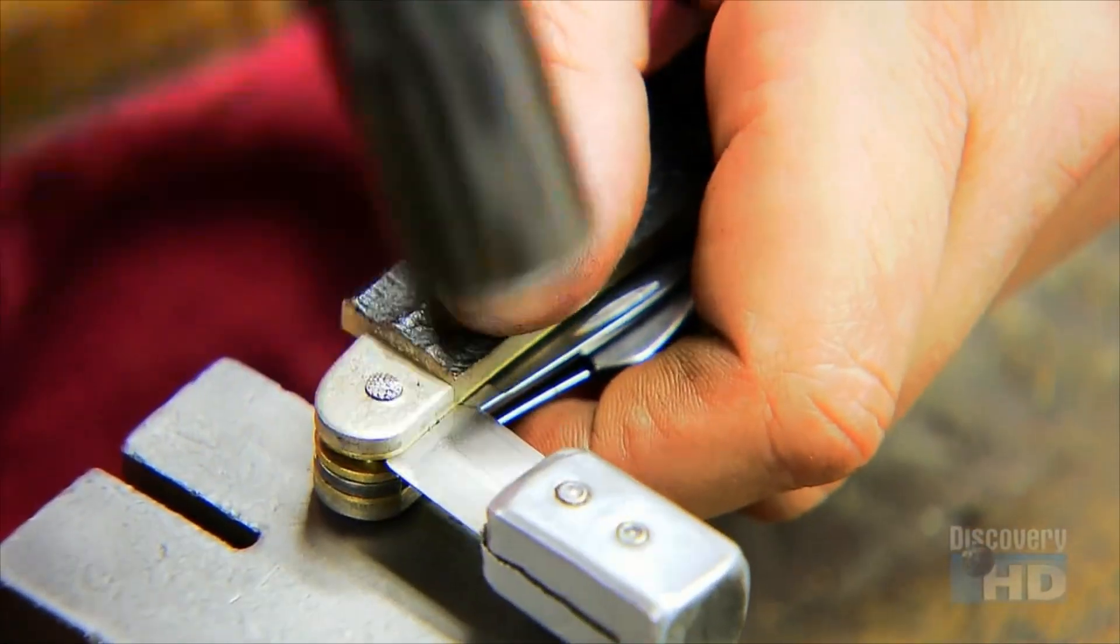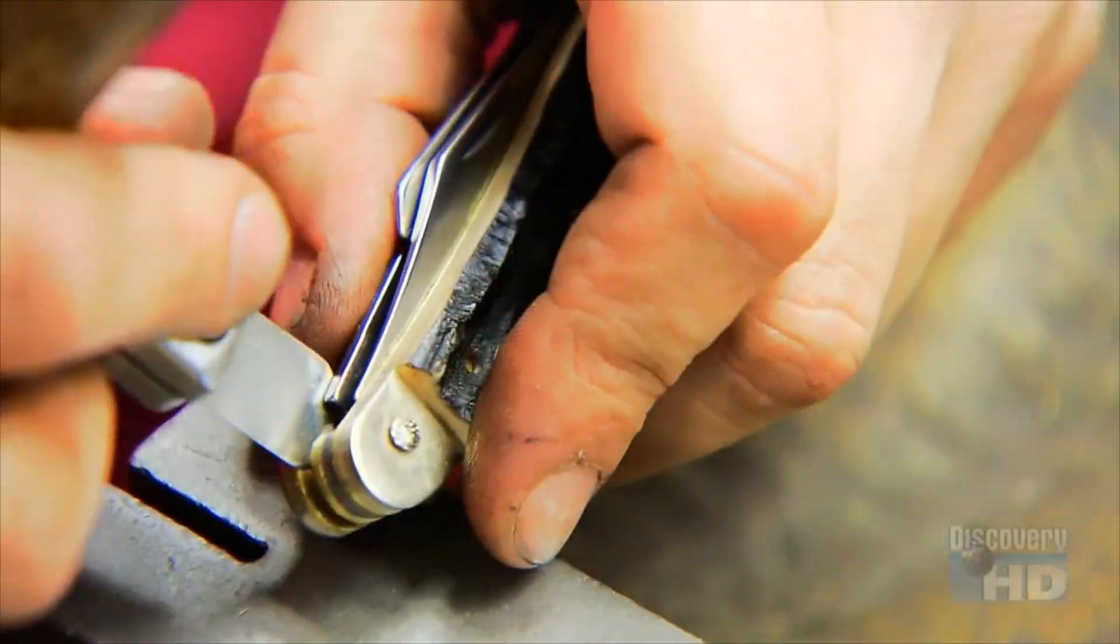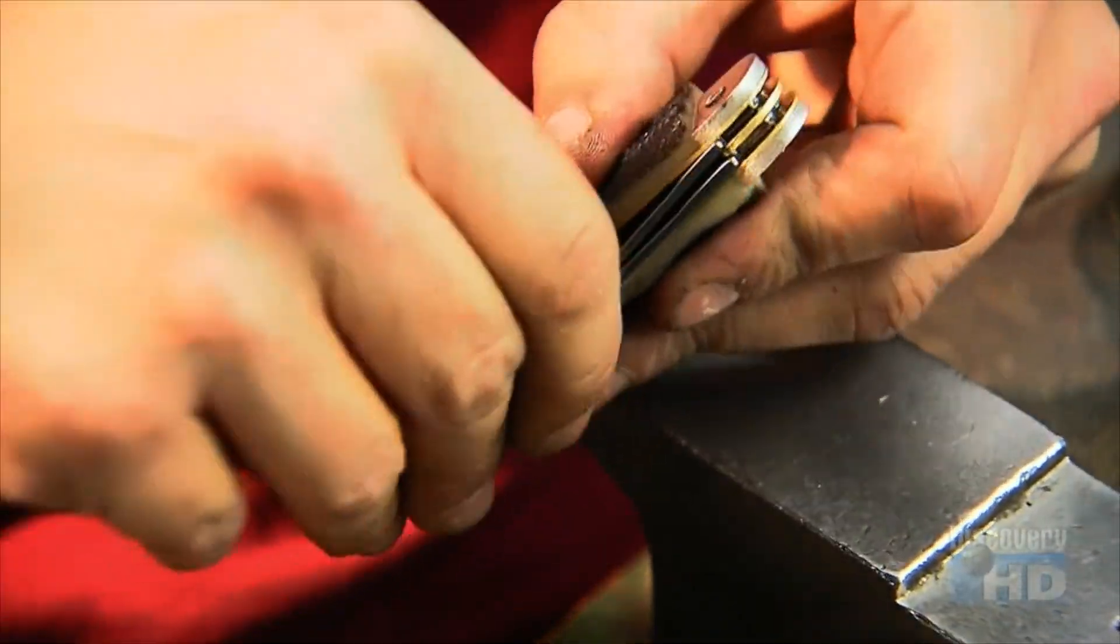Sometimes they pound a shim between the layers to open them up so the knives can move more freely. It's a little fine-tuning.